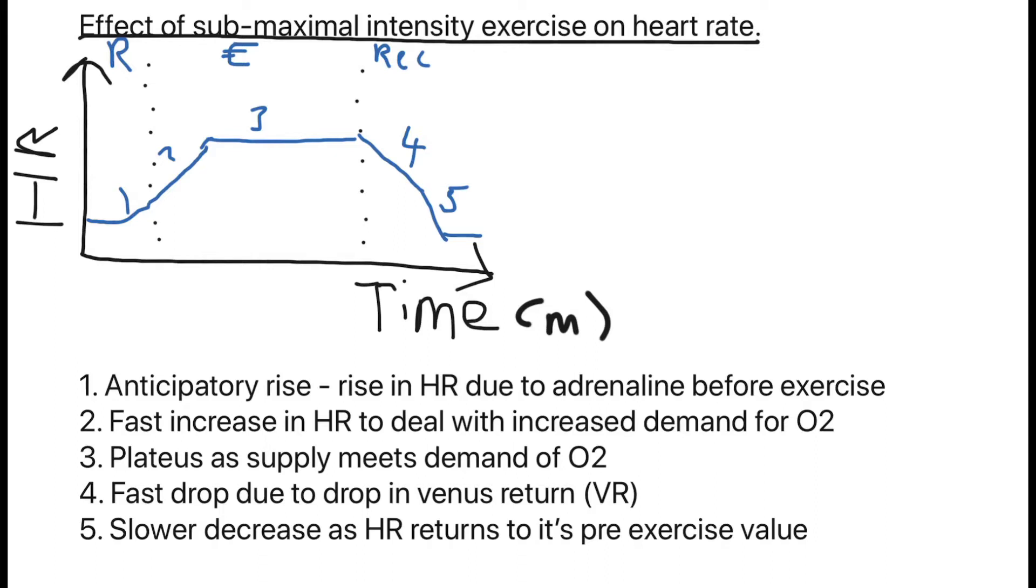What this shows is number one, there's that little rise there. That's the anticipatory rise. Your body knows about exercise so it releases adrenaline and that then increases heart rate which then increases oxygen supply to the muscles and nutrient supply. Then secondly, you've got a fast increase in heart rate to deal with the increase in demand for oxygen.